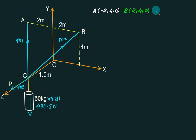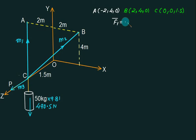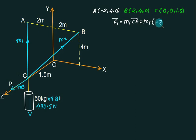What is the coordinate of C? It is (0, 0, 1.5). Now let's assume force direction from C to A, so this is F1. F1 equals m1 times vector CA. Vector CA equals A minus C, which is minus 2i plus 4j minus 1.5k.